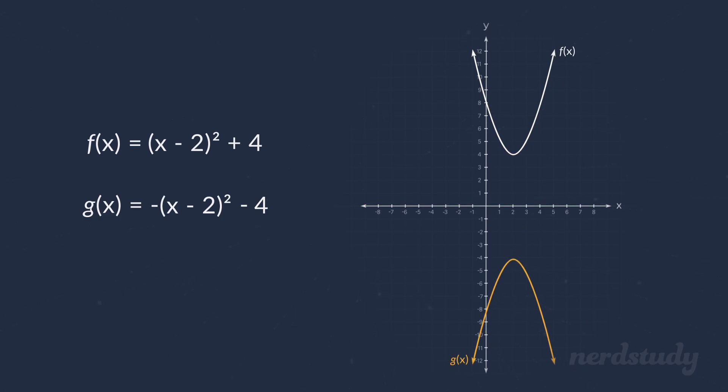Now, you might be wondering, why did we end up with a negative 4 if we only wanted to perform a reflection? Wouldn't that also cause a vertical shift? And the answer to that is yes, it would cause a vertical shift in the opposite direction.